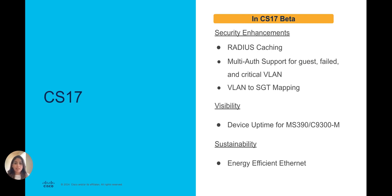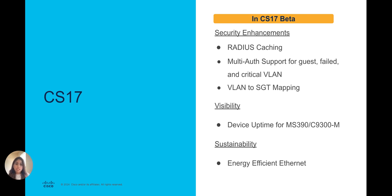Next, I wanted to highlight the features in the CS17 beta release, which are specifically for the MS390s, C9300-Ms, and the migrated C9300s. The focus of CS17 is to introduce new features and benefits in the areas of security, visibility, and sustainability for our expanding user community utilizing the unified hardware platforms managed by Meraki. RADIUS caching, multi-auth support, and VLAN to SGT mapping are new introductions in the security realm.